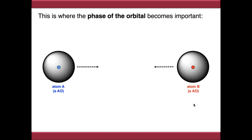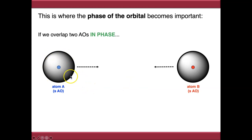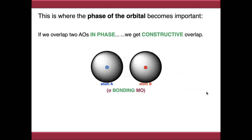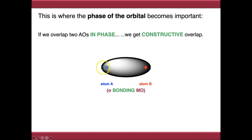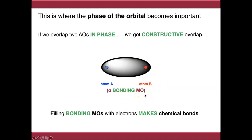This is where the phase of the orbital becomes important. Sticking just with s orbitals for simplicity, if we mix two atomic orbitals in phase - so the phases match, either both shaded or both unshaded - we get constructive overlap. Mathematically, the two equations constructively interact with each other, giving a stronger interaction. We end up with orbital density in between the two atoms, and this is what we call a bonding molecular orbital. Filling bonding molecular orbitals with electrons makes chemical bonds.